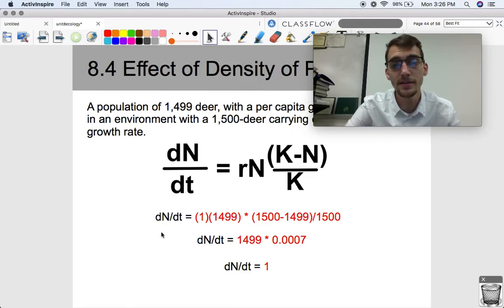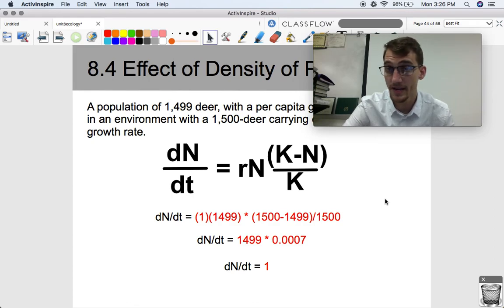So this is logistic growth. And this is what a real population will look like on account of density-dependent limiting factors.